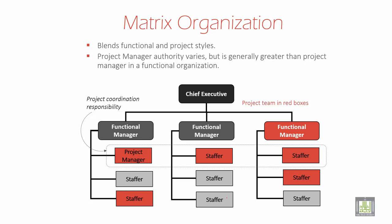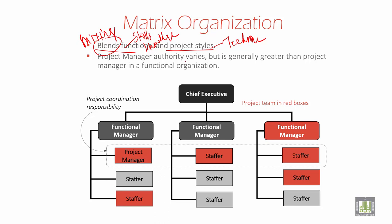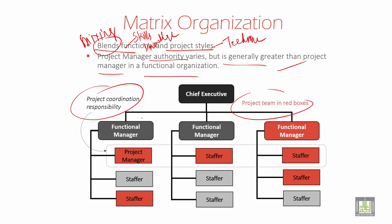Matrix organization — here we have a blend, meaning a mixing of functional and project styles. It's about techniques of how you do the project. Functional talks about a group of workers based on skill and knowledge. The project manager's authority varies but is generally greater than the project manager in a functional organization. The black one is coordination where the functional manager is head, and the red represents the project team members.